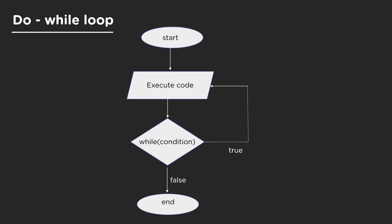Next up is the do while loop. Here, as you can see, first the code is executed and then the condition is checked. If the condition is true then the code execution continues, and if it's false it's terminated. This is an exit control loop. Also in an exit control loop, the code is executed at least once.